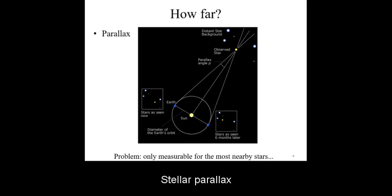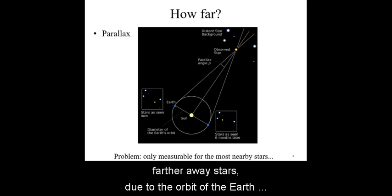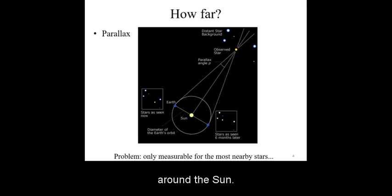Stellar parallax is the apparent motion of a nearby star relative to farther away stars due to the orbit of the Earth around the Sun.